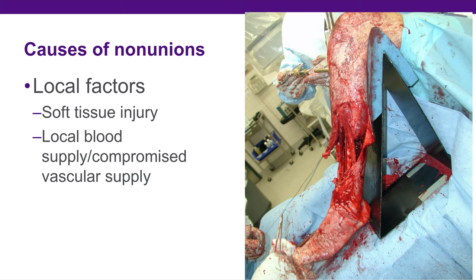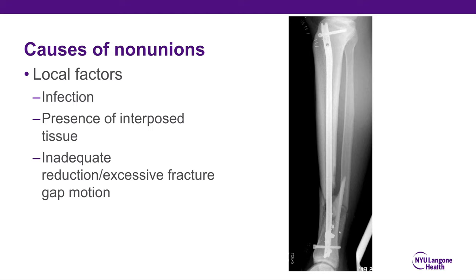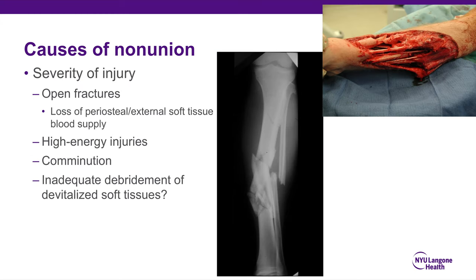Local factors include soft tissue injury — obviously with a severe injury you're going to have a hard time getting that bone to heal — and also the local blood supply or compromised vascular supply. Infection can affect union, as can the presence of any interposed tissue. If you look at a tibial nail with a big gap, there's probably something in there interfering with healing, as well as inadequate reduction or excessive fracture motion. Open fractures have a higher non-union rate than closed because you've lost the periosteal or external soft tissue blood supply. High energy injuries, comminuted injuries, and inadequate debridement of devitalized soft tissues also lead to non-union.